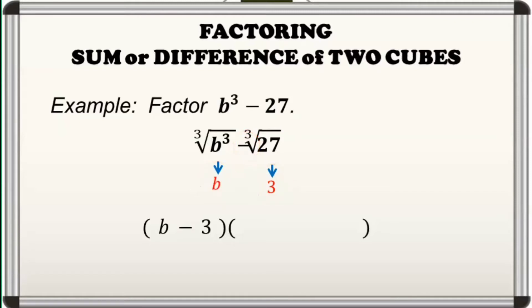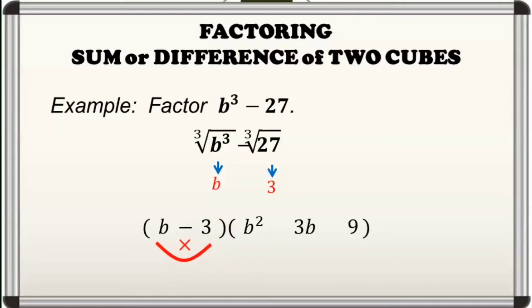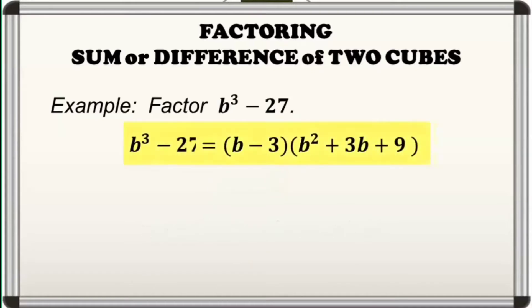Using this binomial factor, we form our trinomial factor. First, square the first term. Next, square the second term. And lastly, multiply the first and second term. This time, the sign of our second term in the trinomial factor is positive, since it should always be opposite the operation used in our binomial factor. And again, the last term is always positive. Hence, the factored form of b cubed minus 27 is the quantity b minus 3 times the quantity b squared plus 3b plus 9.